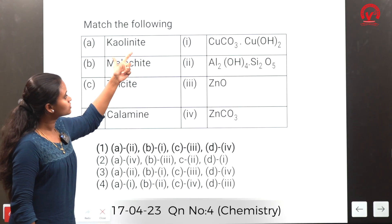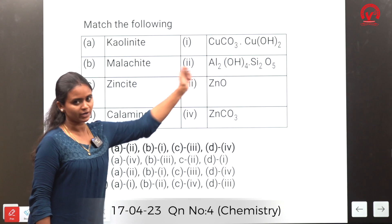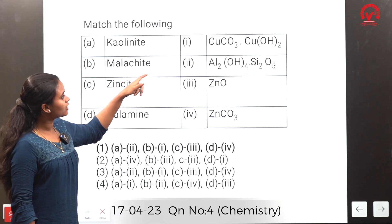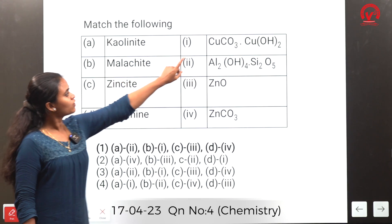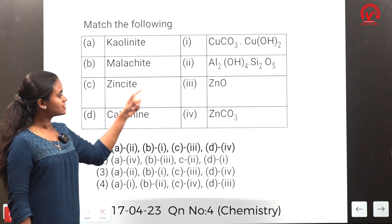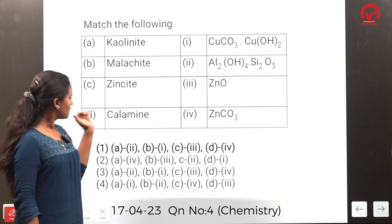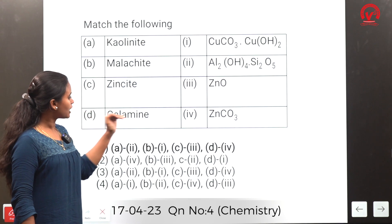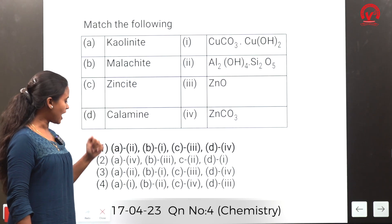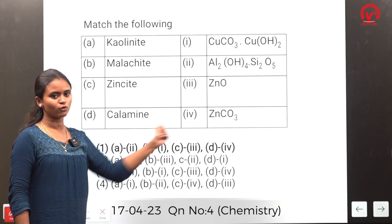Match the following: Chiolite is an ore of aluminium. Malachite is an ore of copper. Zinc oxide is zinc oxide and calamine is zinc carbonate. So the answer is 2, 3, and 4.